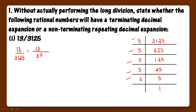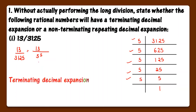Now we know that agar denominator mein 2 ki powers ho, 5 ki powers ho, ya dono ki powers ho, toh decimal expansion terminating hota hai. So, it is terminating decimal expansion.